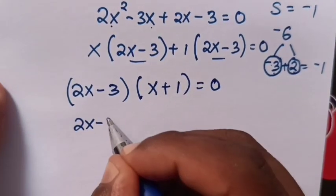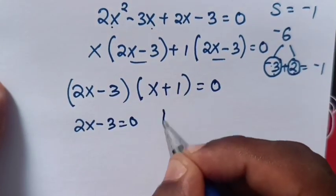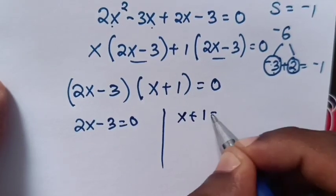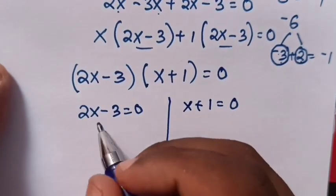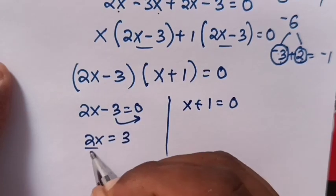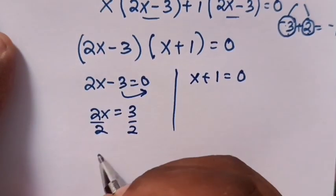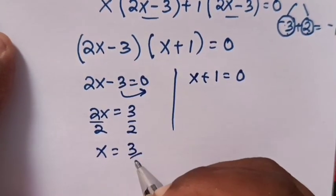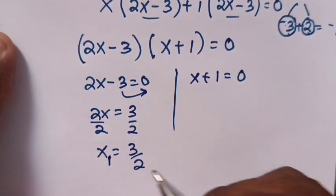Now we have two cases: 2x minus 3 equals 0, and x plus 1 equals 0. Then 2x equals 3. We divide by 2 on both sides. x equals 3 over 2. The value of x₁.